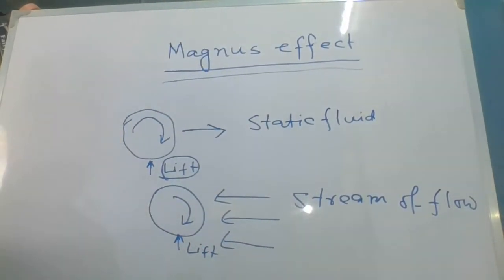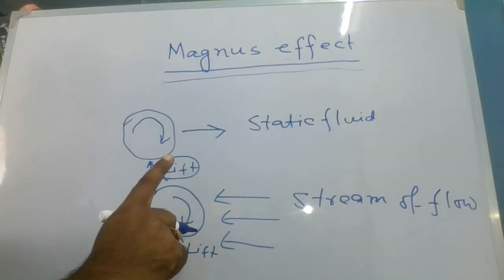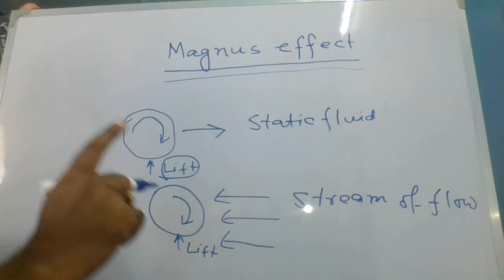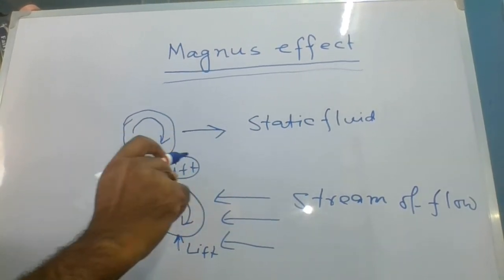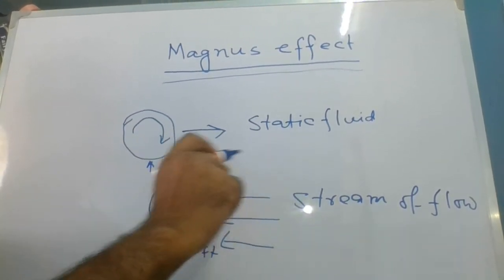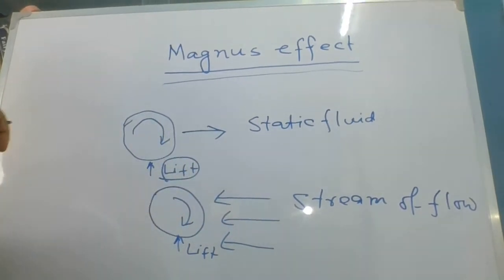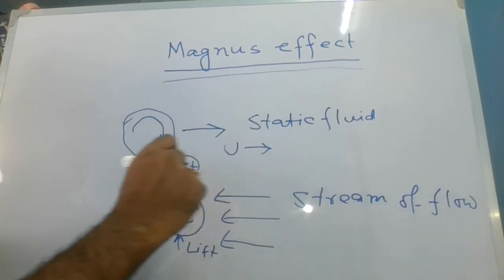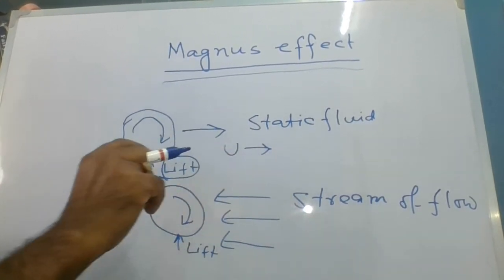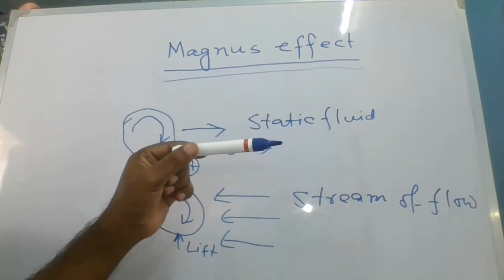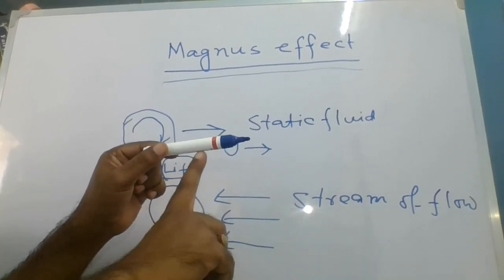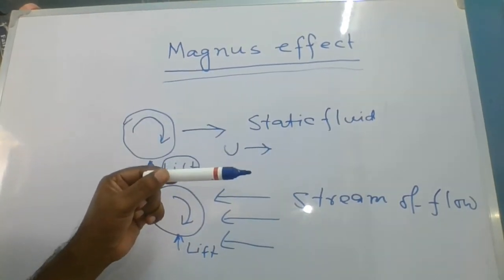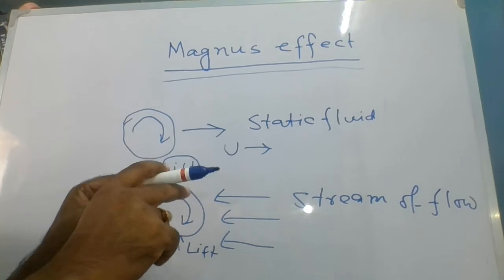is known as Magnus effect. This Magnus effect always acts perpendicular or normal to the flow velocity direction. Suppose this object is moving in this direction with velocity u, so if the object moves in this fashion, it will act perpendicular to the flow direction, or we can say it acts in the transverse direction.